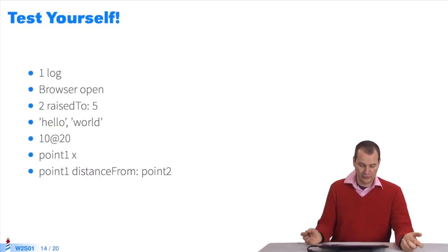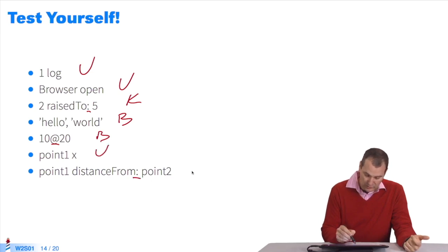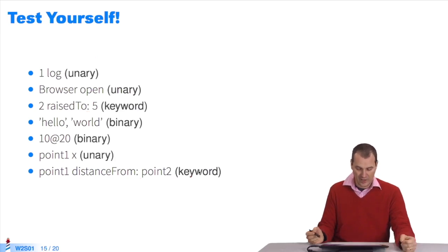It's time to test yourself. I'll give you a couple seconds. What are these messages? What types do they belong to? The first has no argument, it must be unary. The second too. There's a colon, it must be a keyword. There's something with a comma I don't understand, it's binary. It's weird, it's binary. There's no argument, it's unary. There's a colon, it's a keyword.